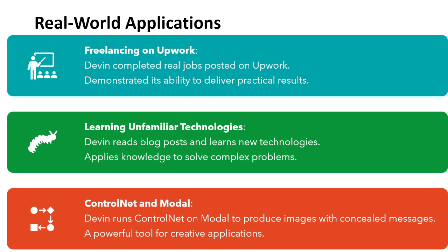Then ControlNet and model: Devin runs ControlNet on a model to produce images. It can create images and conceal images — like watermarking, something similar to that. It has the power to do that. It is a powerful tool to create applications. So if application developers are thinking they can survive, let me tell you: it can develop MEAN stack, full stack, whatever stack you are talking about — it can do it on its own.